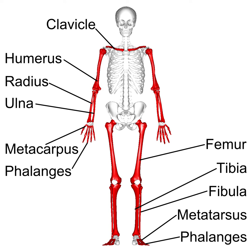Hello friends. This is the anatomy of a long bone. The long bones are those that are longer than they are wide. They are one of five types of bones: long, short, flat, irregular, and sesamoid.